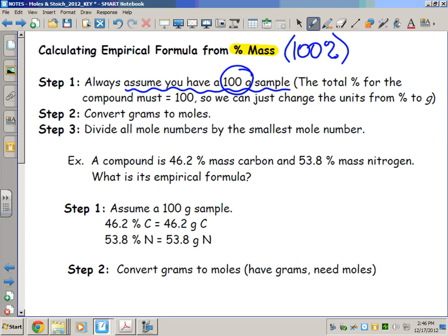Once we have grams, this is great. We know that formulas, chemical formulas, are all about mole ratios. So once we have grams, we can convert from grams to moles, which is what we need in order to determine a formula, whether it's empirical or molecular.